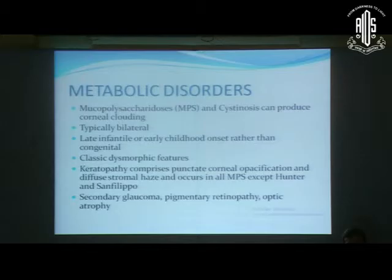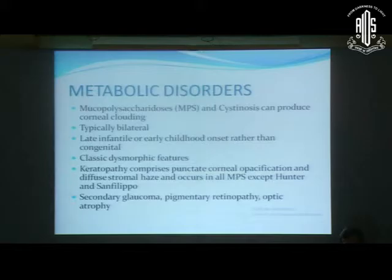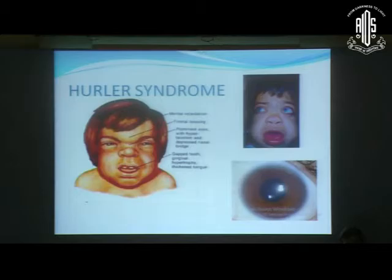Metabolic disorders, although rare, can sometimes mimic congenital glaucoma. Mucopolysaccharidosis and cystinosis can produce corneal clouding, but it is typically bilateral and usually not present at birth — more commonly late infantile or early childhood. These children have classic dysmorphic features. The keratopathy comprises punctate corneal opacification and diffuse stromal haze. In mucopolysaccharidosis, corneal clouding occurs in all types except Hunter and Sanfilippo. Secondary glaucoma, pigmentary retinopathy, and optic atrophy are additional ocular associations.